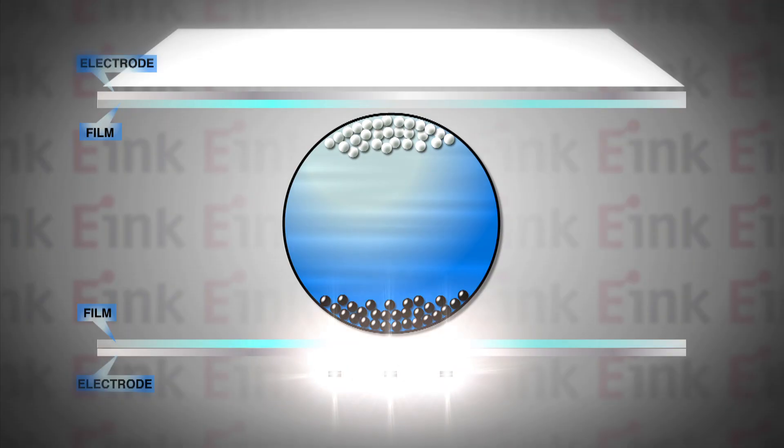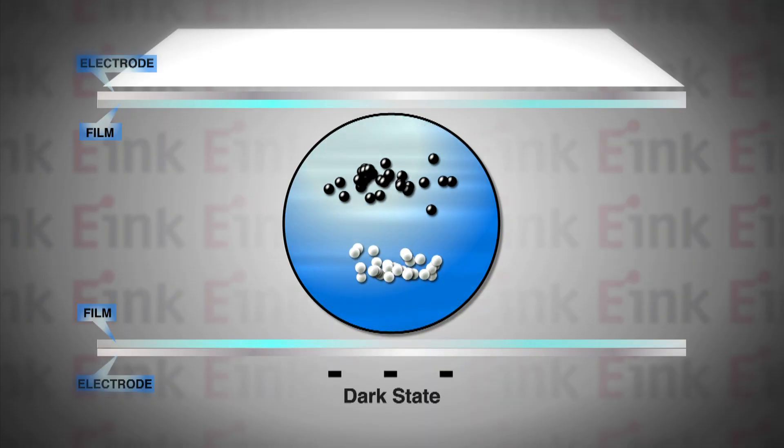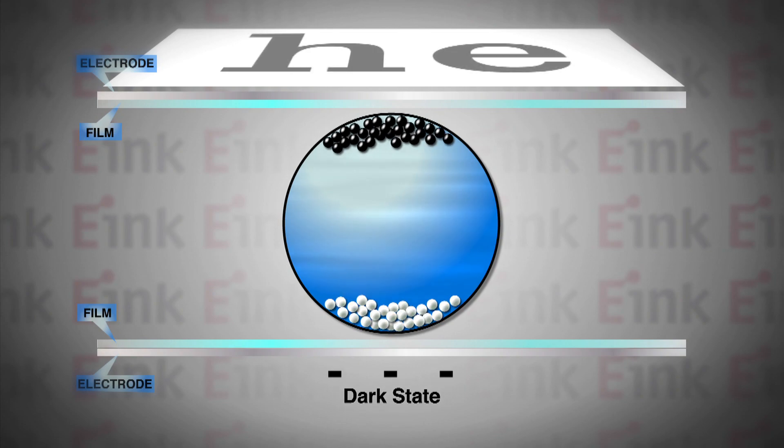When a negative electrical field is applied to the bottom of the film, the negative black particles are repelled to the top of the capsule. This changes the area on the top surface to black.